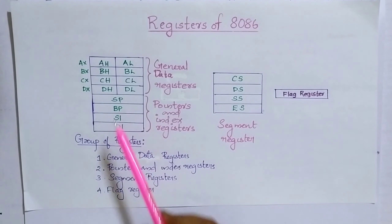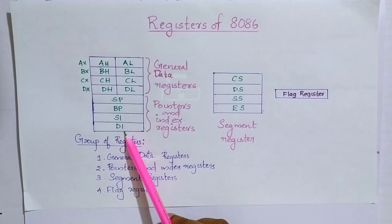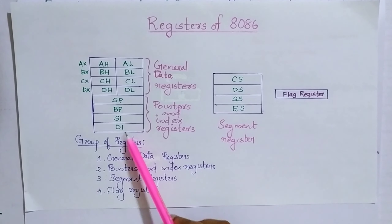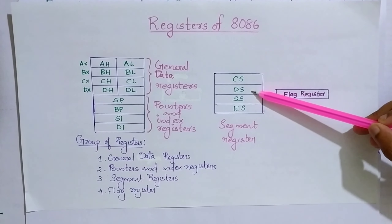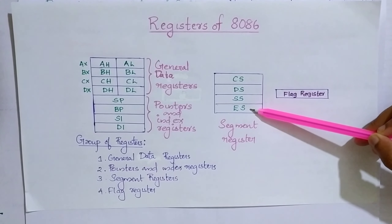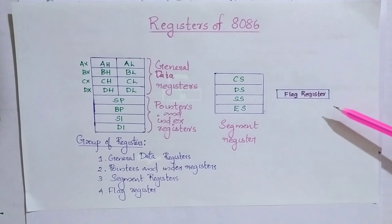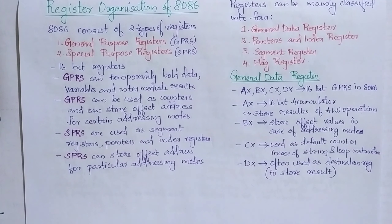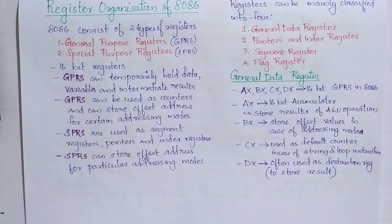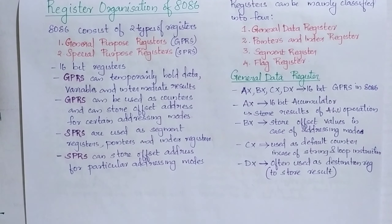The pointers and index registers include two pointers — SP (stack pointer) and BP (base pointer) — and index registers, which are SI (source index) and DI (destination index). For segment registers, there are CS (code segment), DS (data segment), SS (stack segment), and ES (extra segment). The general data registers AX, BX, CX, and DX are 16-bit general purpose registers in 8086.